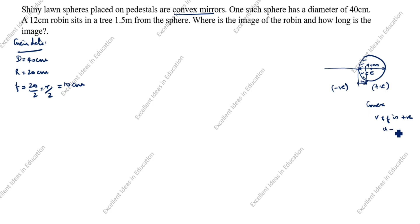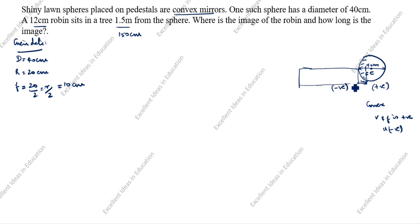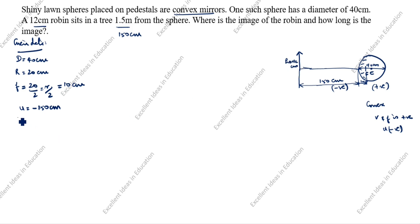u is always negative for a mirror. A robin sits in a tree 1.5 meters from the sphere. 1.5 meters is 150 centimeters, so the object is 150 centimeters from the mirror on the negative side. Therefore, u equals minus 150 centimeters. The object height is 12 centimeters, which is always positive.